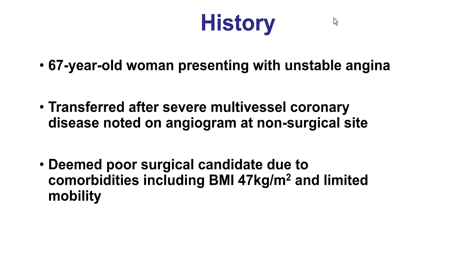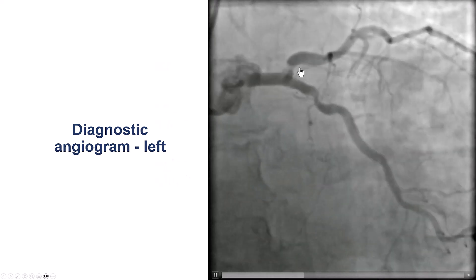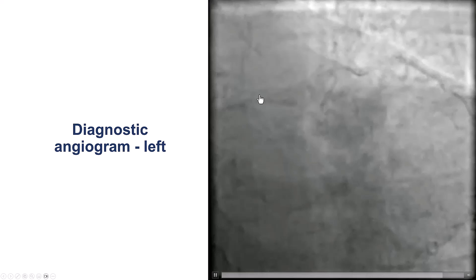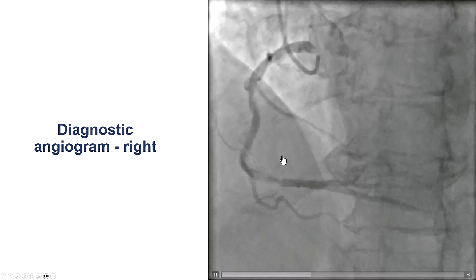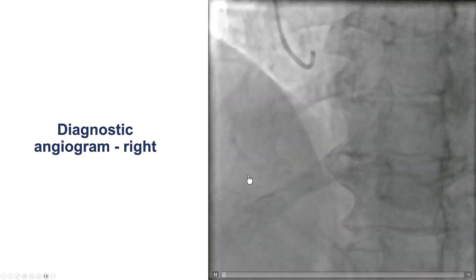The patient was a woman who presented with unstable angina and was found to have multivessel coronary disease, but was turned down for surgery because of high BMI and low mobility. She had significant lesions in the proximal LAD on the left system, and also a severe calcified lesion in the distal right coronary artery.